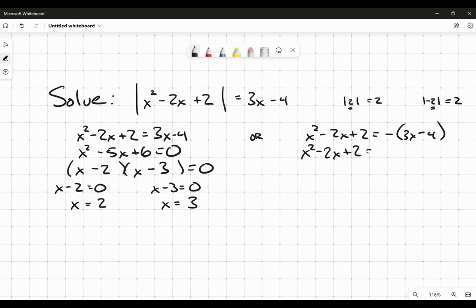I'm going to distribute that negative through first and bring it over. So I get x squared, that becomes positive x, and then minus 2 equals zero.